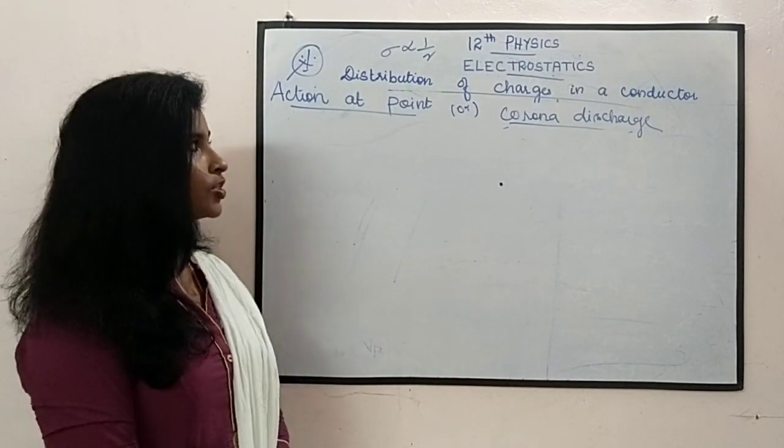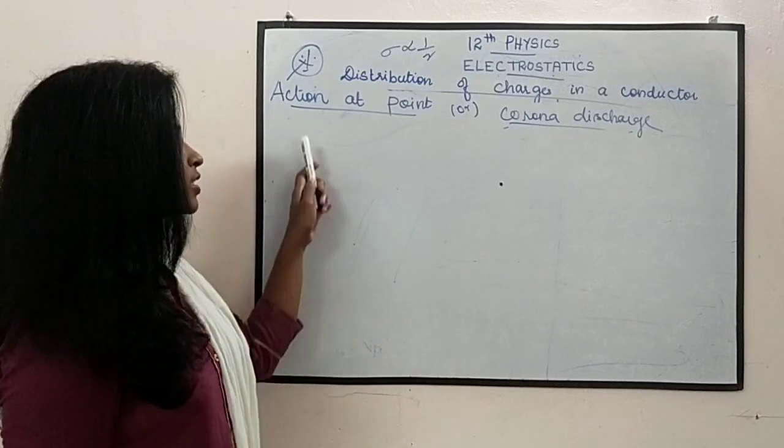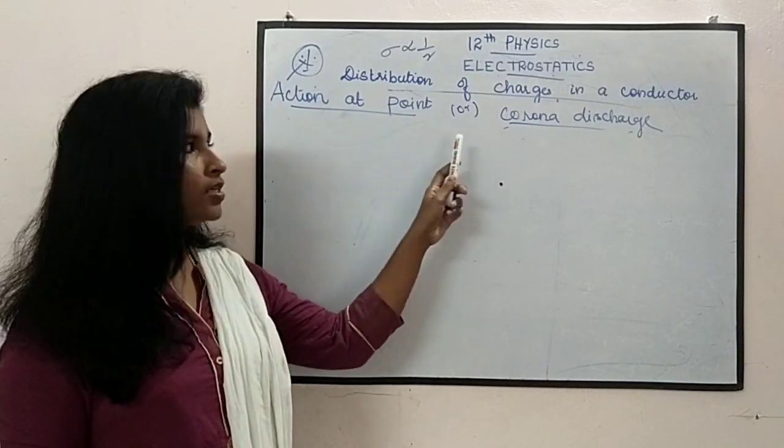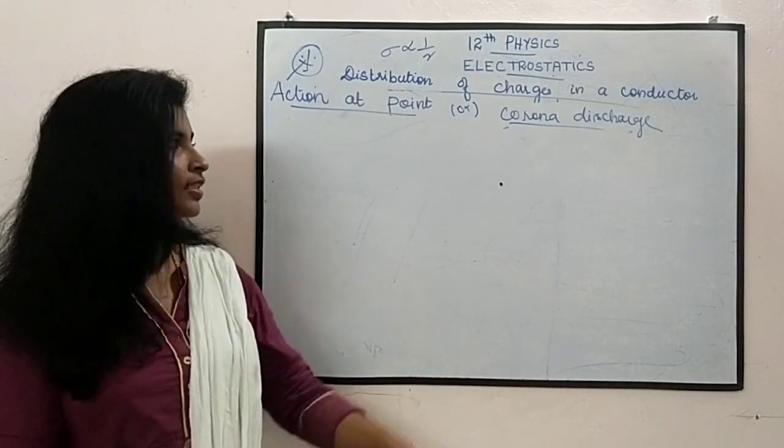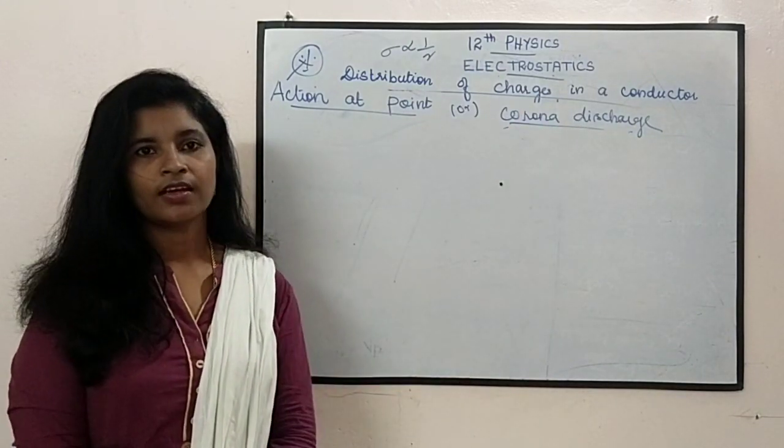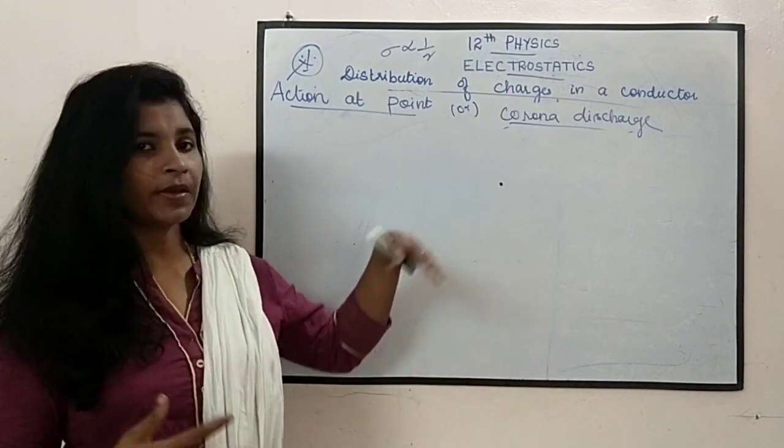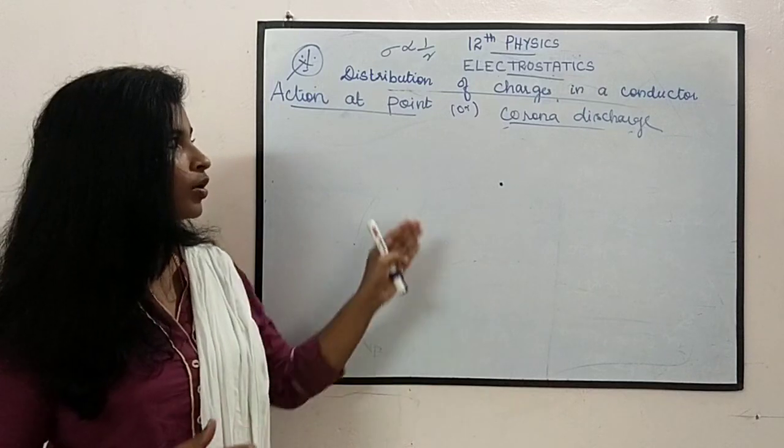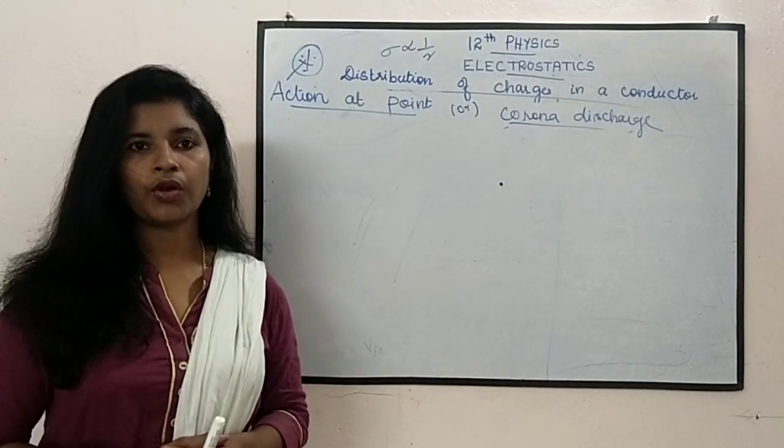Today we are going to discuss the next topic under distribution of charge in a conductor: action at point, or the other name is Corona discharge. I think you are all aware of this word Corona, right. There is no need to explain much about this topic because you were all aware about this Corona concept. What is Corona, what we will do.